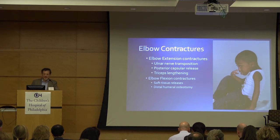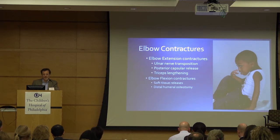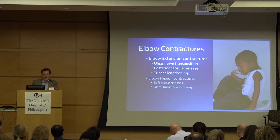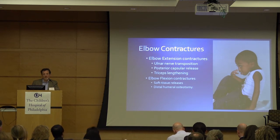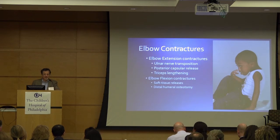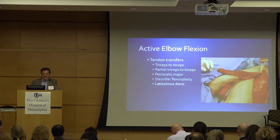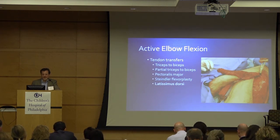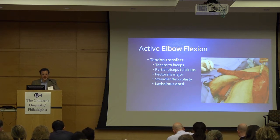Elbow contractures — elbow extension contractures are treated with ulnar nerve transposition, blister capsule release, and triceps lengthening. Elbow flexion contractures are a much more difficult problem to solve. We've been doing distal humeral closing wedge osteotomies to try to improve the position of the elbow and reorient the arc, though we're not increasing the arc. Then we have tendon transfers for active elbow flexion, and we're going to talk about a lot of these things in this symposium.